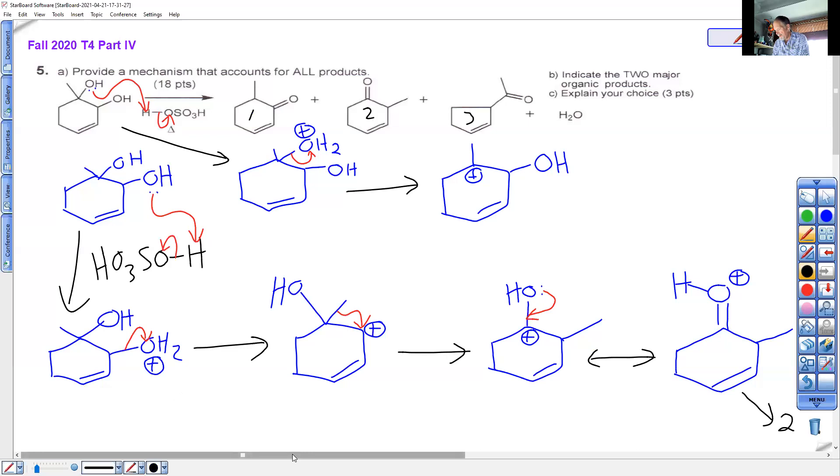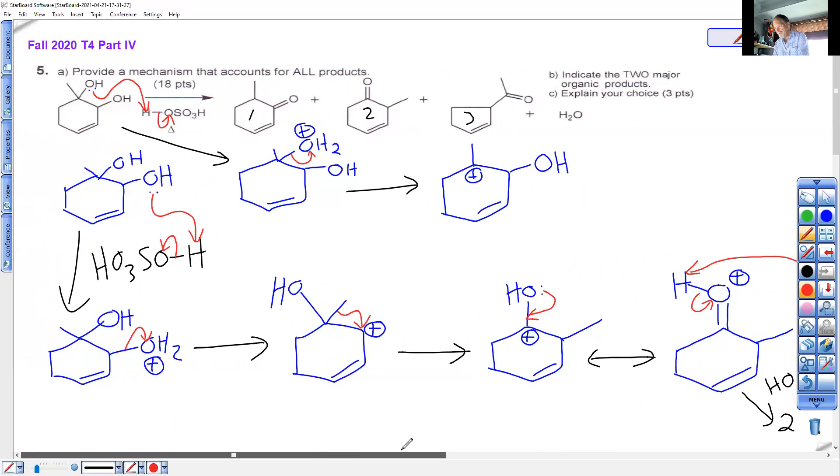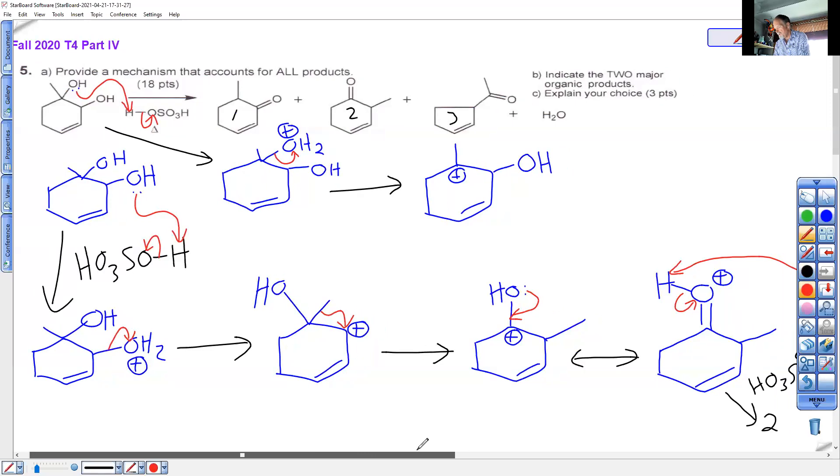So why don't you just draw it right here? It's the sulfate, hydrogen sulfate ion. You need it to get to product two. There it is. Here it is doing its acid base magic. And that gives product two. All right. Indicate two major organic products and explain my choice. Well, we'll think about that later. Let's get this mechanism done.